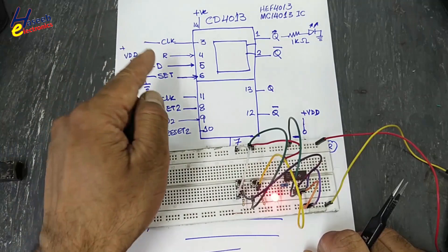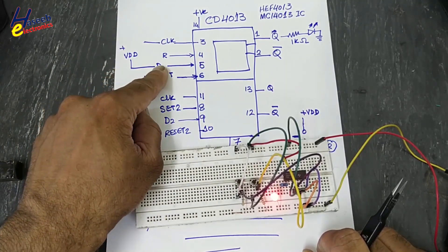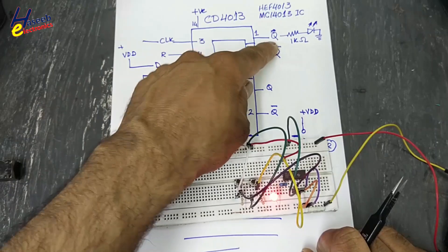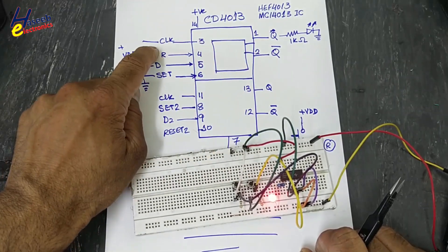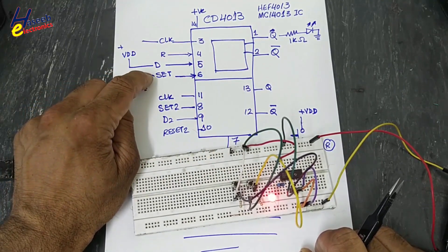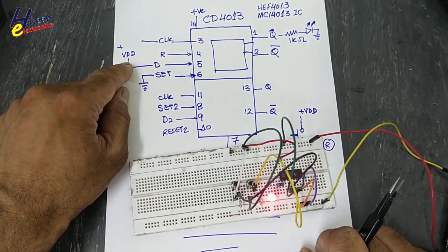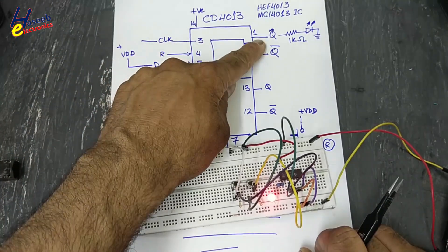At each clock high, it will transfer the data that is available at the D pin and provide it at Q output. When clock is high, if D is high and reset and set are low, this bit will reach the output.